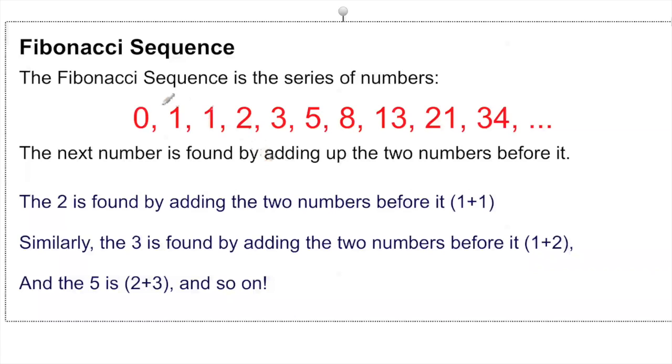Let's take a look at the order in which these numbers are written. The next number is found by adding up the two numbers before it. So if we take the number two, one plus one equals two. Similarly, three is found by adding the two numbers before it: one plus two equals three. Three plus five equals eight. Five plus eight equals 13.